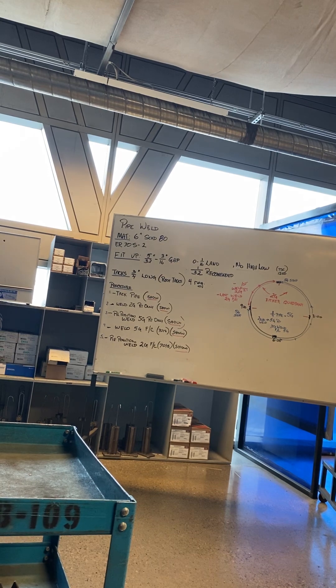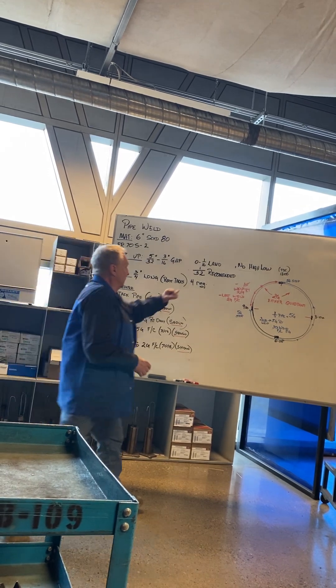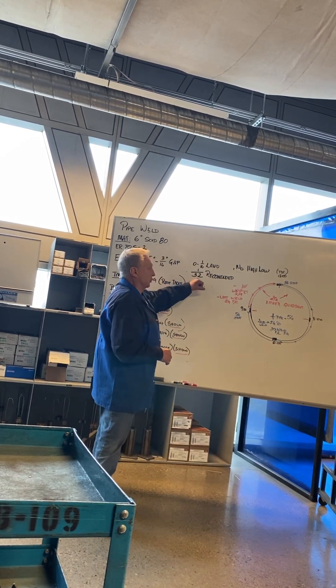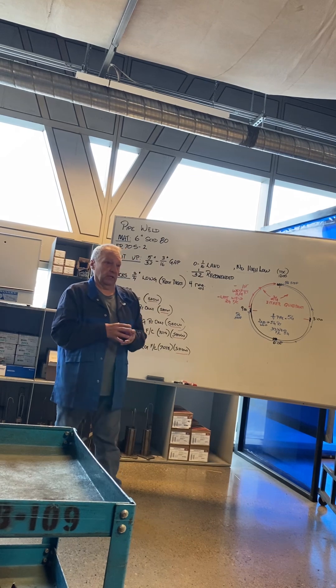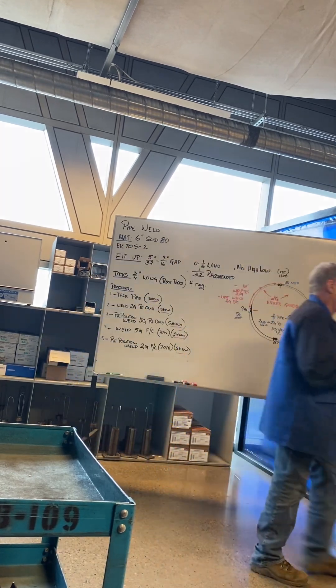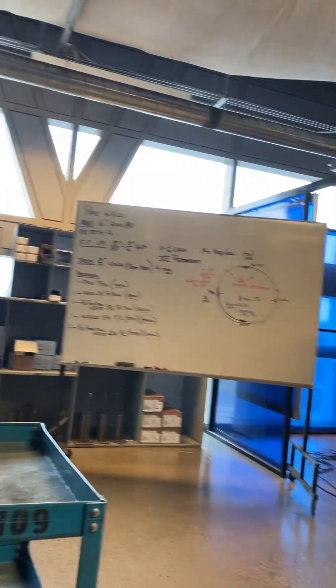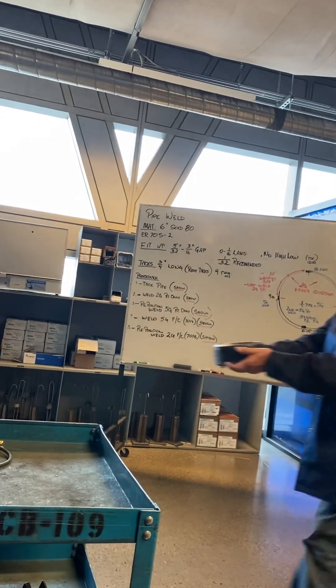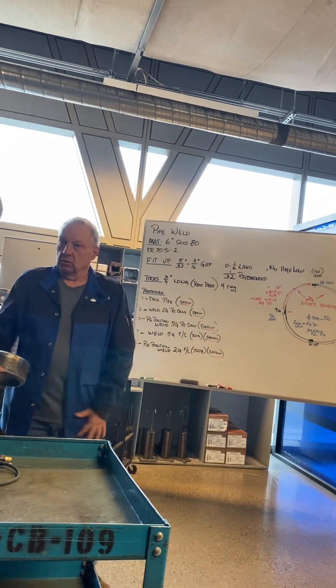So, 0 to a 1/16th land. I lend myself towards a little bit of heavier land, so 1/32nd is recommended for that land on your pipe. You can pass that around.